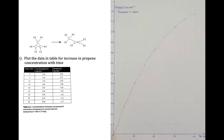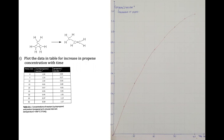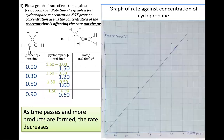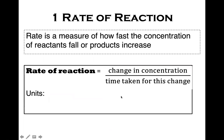This brings us to the introduction of rate of reaction. Some of you may know it as the speed of the reaction — how fast or how vigorous the reaction is going. The definition of rate of reaction from your notes: the rate of a reaction is a measure of how fast the concentration of reactants falls or decreases, or how fast the concentration of products increases. There are two factors: speed (related to time) and concentration.